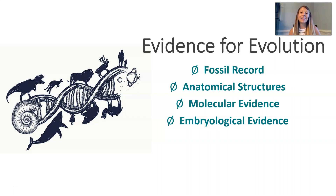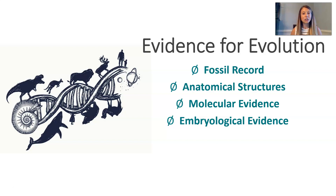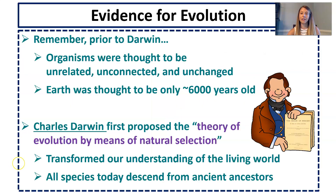We're looking at the evidence for the theory of evolution. We're going to be looking at four main pieces of evidence: fossil record evidence, anatomical structure related evidence, molecular evidence, and embryological evidence.